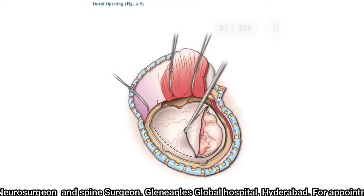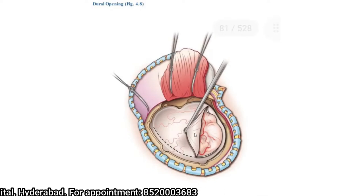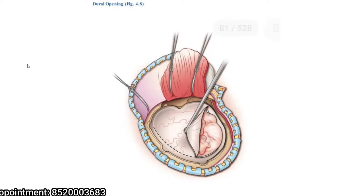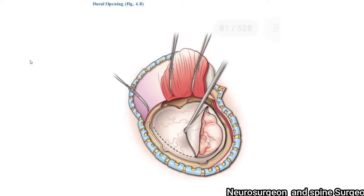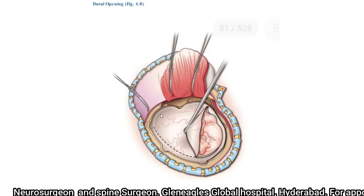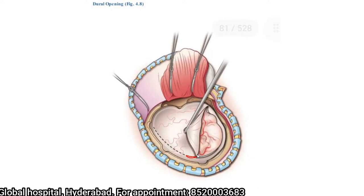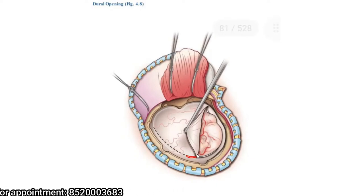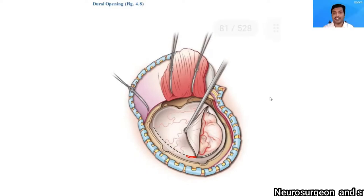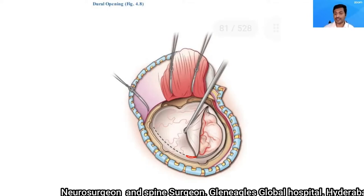When opening the dura, you should open it centimeter by centimeter. This is to prevent a sudden prolapse of the injured edematous brain and to prevent sudden decompression, which can cause a tear in the venous sinus and cause bleeding. When taking the cut in the dura matter with scissors, ensure that you are visualizing the undersurface of the dura matter so that if any veins are seen, you can delicately separate them from the dura matter, preventing injury to those veins.